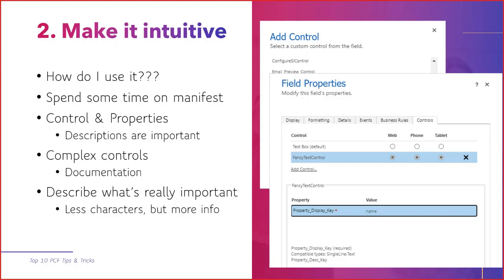If they don't know how to use it, they will not use it. The two most important things are the control and property nodes in the manifest. You need to input all the descriptions - you need to make the user know what that property does and what the control does in general. Please populate all the values. If you have complex controls that have JSON configurations or other complex things, you need to write documentation. Most controls are available on GitHub and they have documentation there.